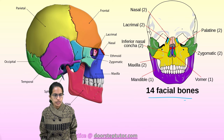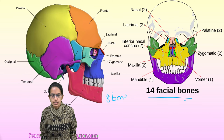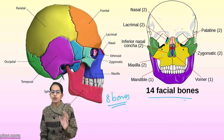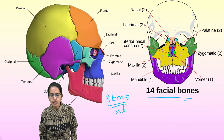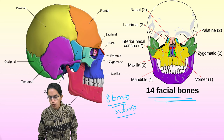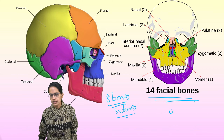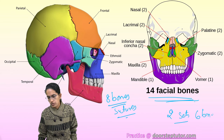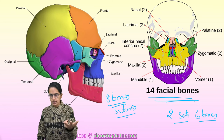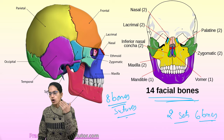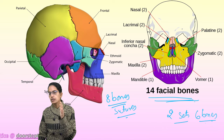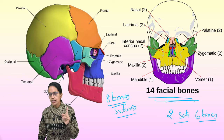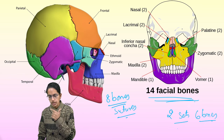In the skull, there is the cranium which has eight bones. These eight bones are not movable — they are permanently fixed together by sutures. Then we have 14 facial bones. Two sets of six bones are present in the sense organs: eye, ear, and nose.